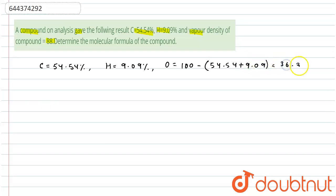So 54.54 plus 9.09, this is equal to 36.36%. Okay, so now draw a table or I'm just writing Element, Moles, Least Ratio.